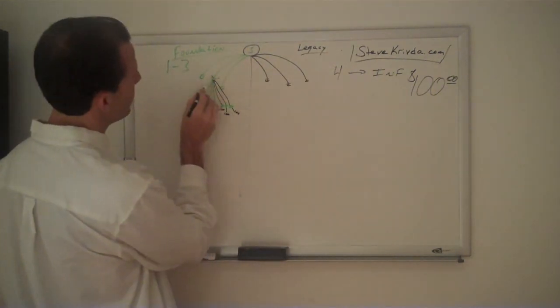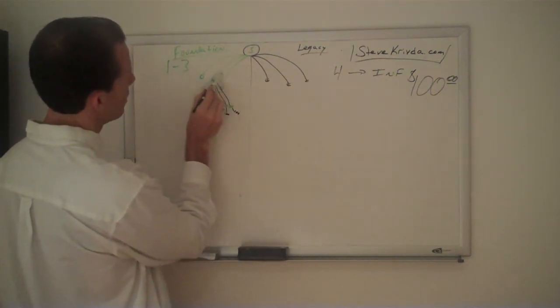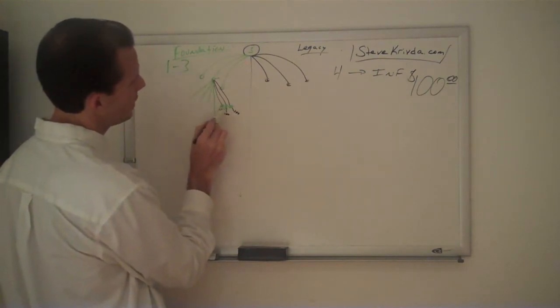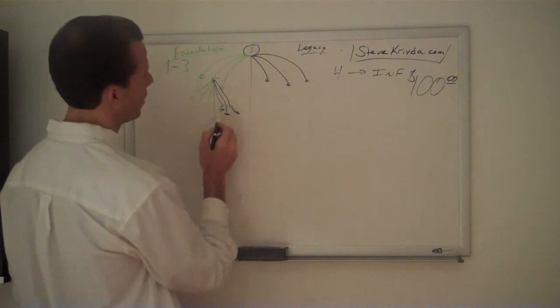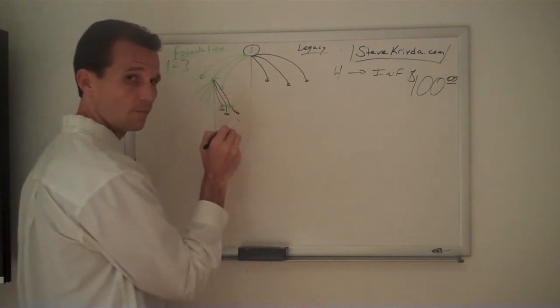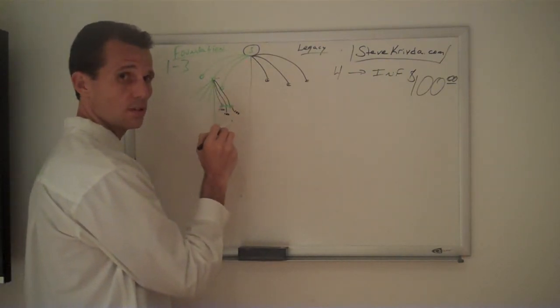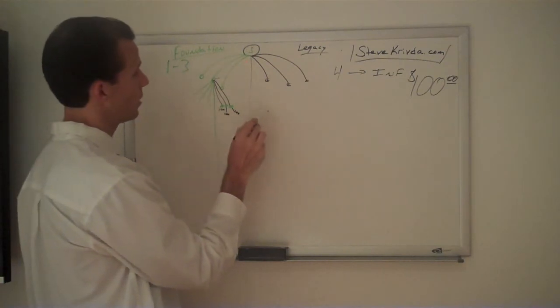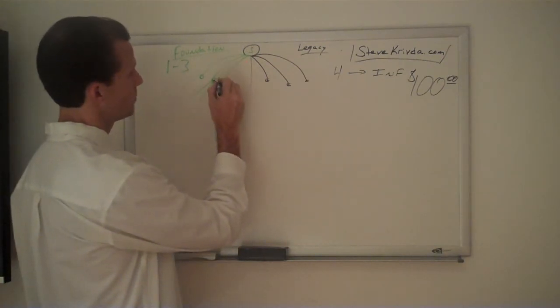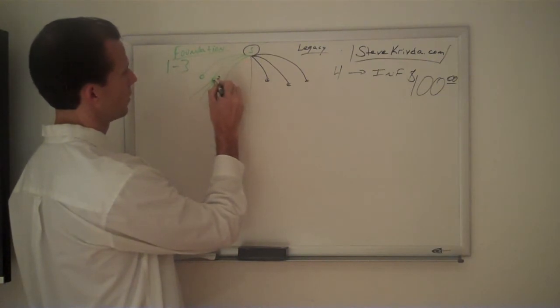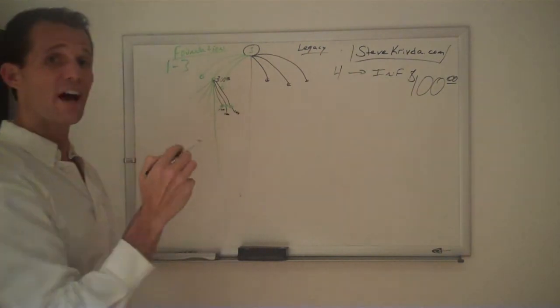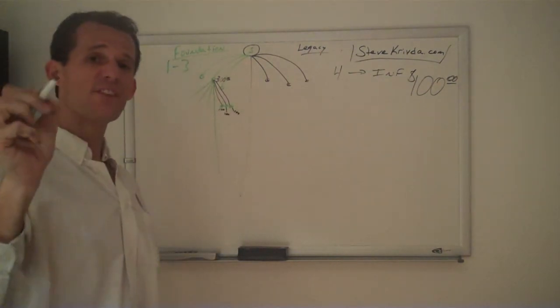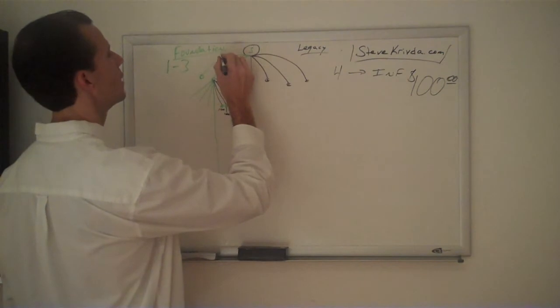So every time that somebody in your foundation creates a legacy side, or legacy four through infinity people, once they hit it, every single person that they get on their team after that point gets this person a 100% matching bonus. So they get $300. And just because they're in your foundation, you get a 50% match.